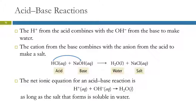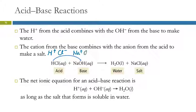In an acid-base reaction, the hydrogen ion from the acid combines with the hydroxide ion from the base and they make water. For HCl and NaOH, we can think of this the same way as precipitation reactions—switching partners. We have hydrogen and chloride ions and sodium and hydroxide ions. Swapping partners gives us sodium with chloride and hydrogen with hydroxide.